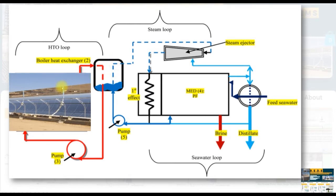This is our process. We have a heat transfer oil pump, a Parabolic Trough Collector, and an intermediate boiler heat exchanger unit to transfer energy. The motive steam is coming from the boiler heat exchanger unit, going to power on the thermal vapor compressor, and the compressed vapor is going to power on the first effect of MED.